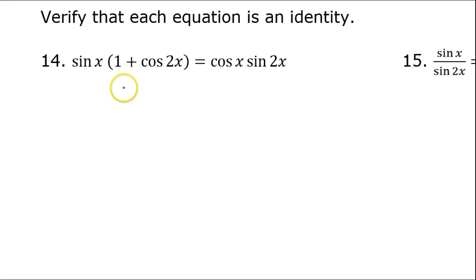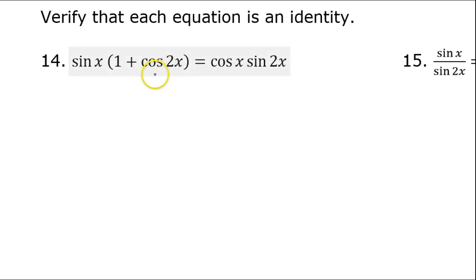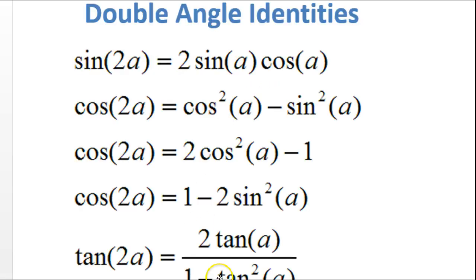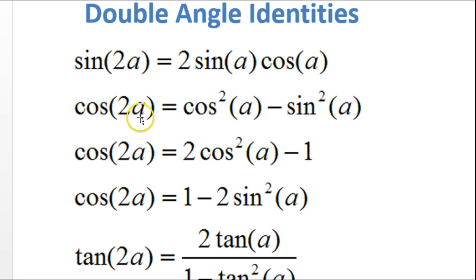In this video, I will show you how to verify an identity when you're dealing with double angle trig functions — cosine of 2x and sine of 2x. We will be referring back to these identities and using them. Notice that cosine of 2a has three different versions, so we have to choose carefully which version we're going to use.